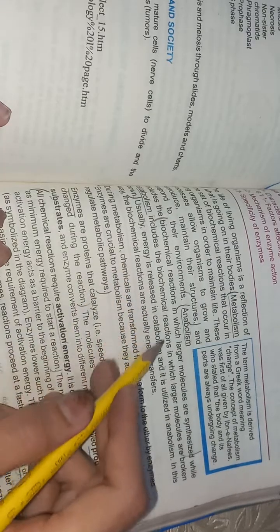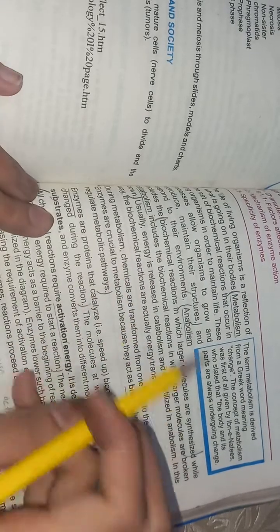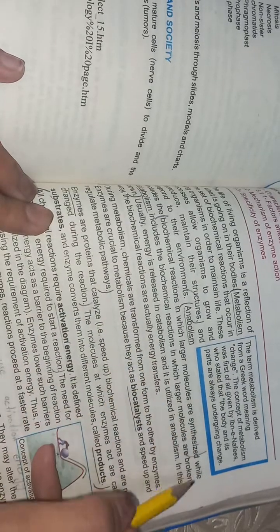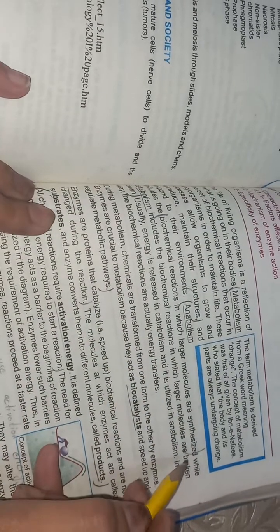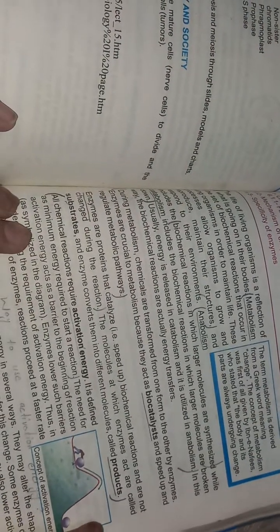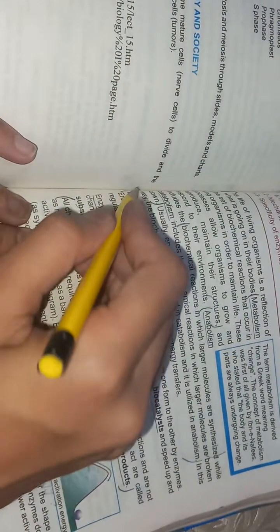Catabolism includes chemical reactions in which large molecules are broken down. Usually energy is released in catabolism and utilized in anabolism. This is the definition of anabolism and catabolism. Most important: differentiate between anabolism and catabolism. Next: enzymes definition.